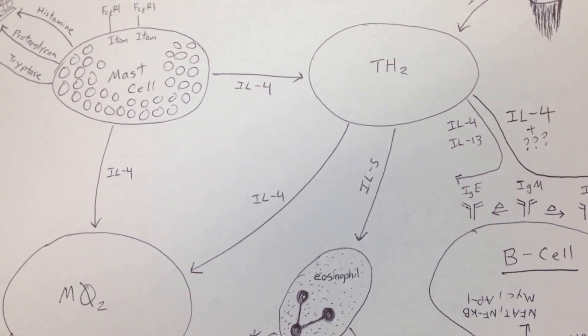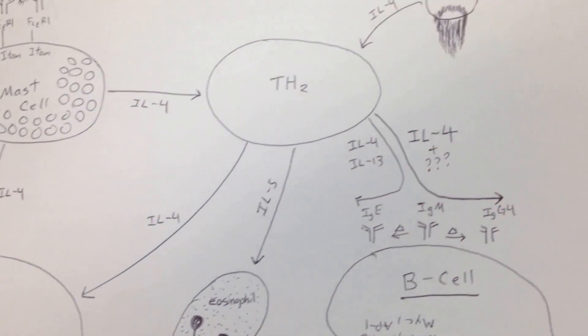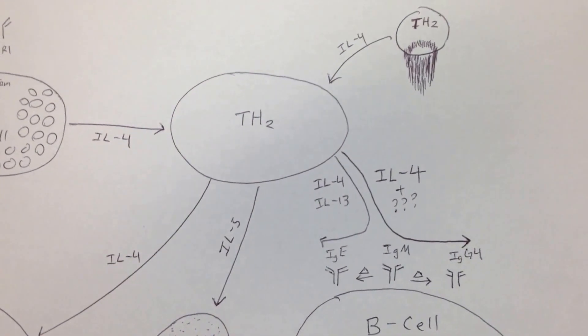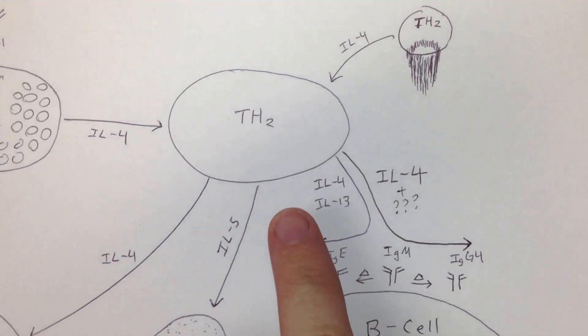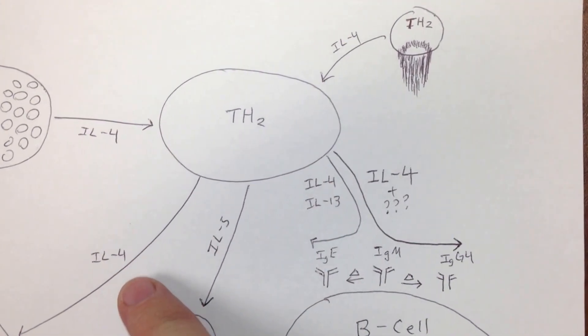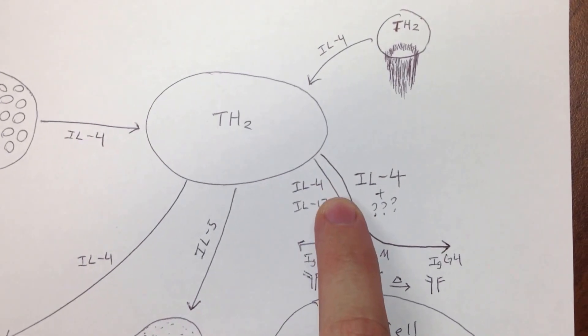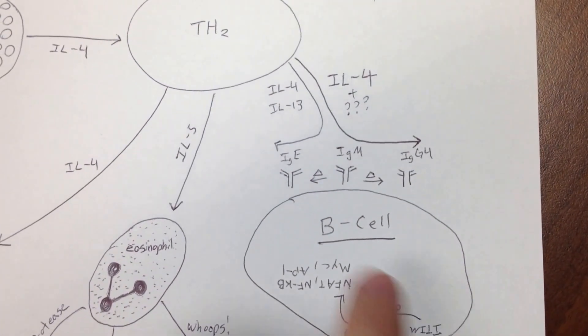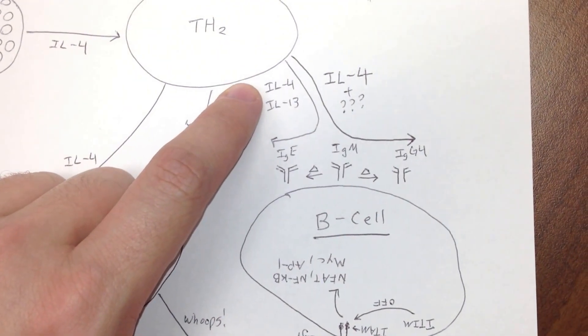Once this T helper 2 cell is clear about its job being a T helper 2 cell, and we notice that it secreted IL-4 down to the macrophage, it can also secrete some IL-4 and talk to B cells.